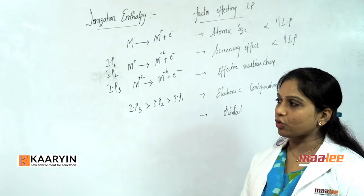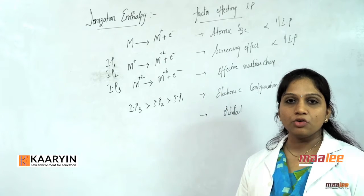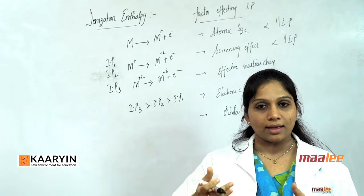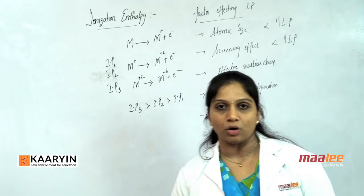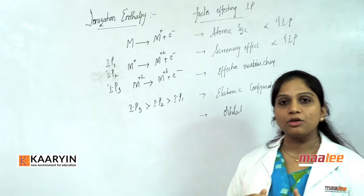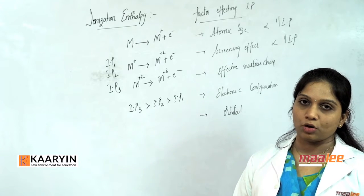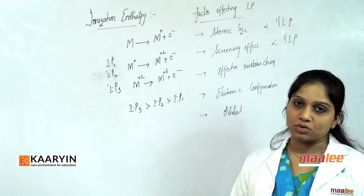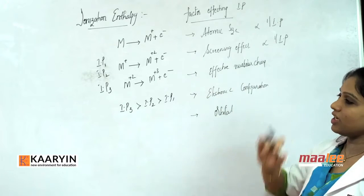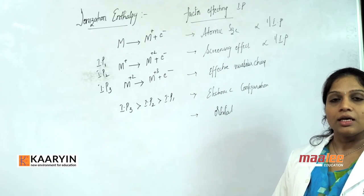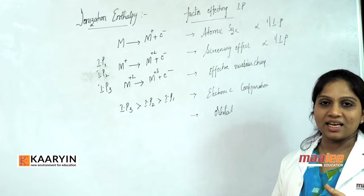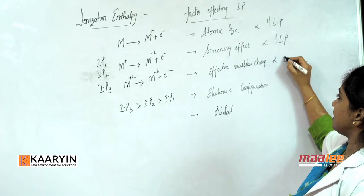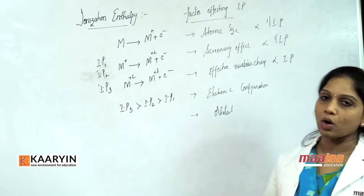The next factor is effective nuclear charge — the attraction between the nucleus and the electrons present in the outermost orbital. As this attraction is more, it is highly difficult to remove the electron. So if effective nuclear charge is more, the IP values will be very high; if effective nuclear charge is less, IP values will be very less. Therefore, effective nuclear charge is directly proportional to ionization potential.